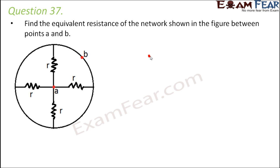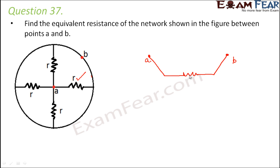Let us first draw the two points A and B, because we have to find the equivalent resistance between these two points. Between A and B, on one side you have one R resistance which is directly connected between A and B. So let us draw this resistance which is directly connected between A and B.